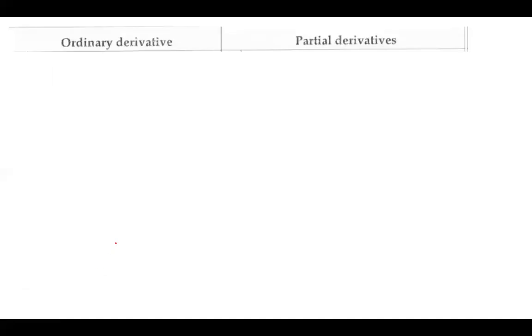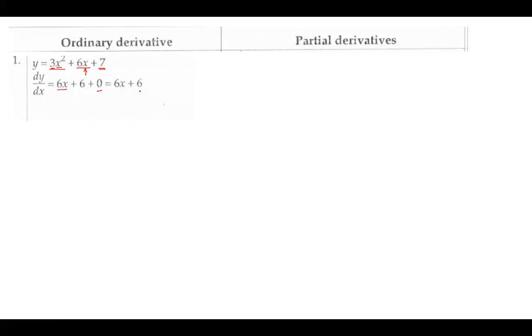Let us see what is the difference between ordinary derivatives and partial derivatives. For an ordinary derivative, if we have the function y = 3x² + 6x + 7, differentiation of y with respect to x is written as dy/dx. The derivative of x² is 2x, so 2x times 3 gives 6x. Derivative of x is 1, so 1 times 6 gives 6. 7 is a constant so its derivative is 0. Therefore dy/dx = 6x + 6.